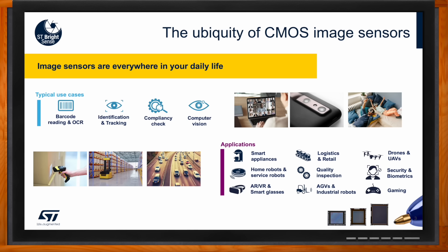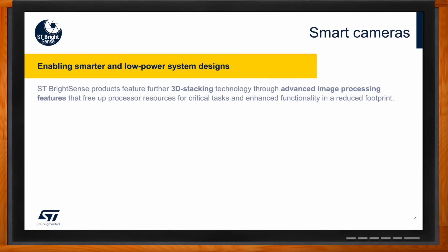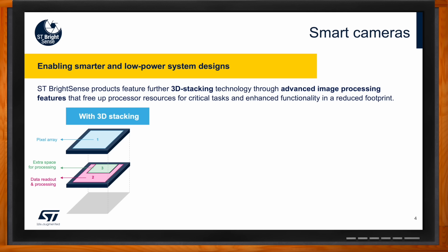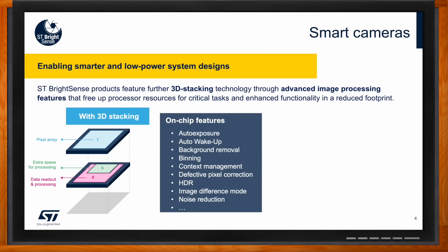Now we've been talking about how smart your cameras are, so Thomas, what makes them smart? At ST we develop a technology called 3D stacking. As you can see on the left, the 3D stacking principle uses two different layers of processing. The first layer is dedicated entirely to sensing — a 100% pixel array shown in blue. The second, bottom layer handles all the processing. With the space shown in pink and green, you have more processing space than a standard sensor on the market, allowing a lot of on-chip features to be embedded.